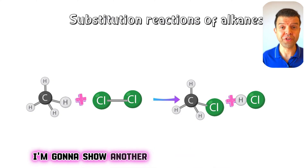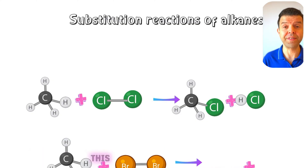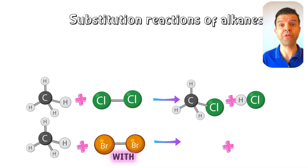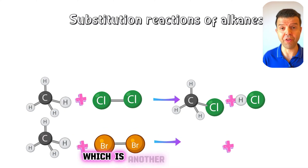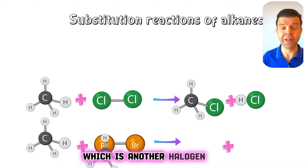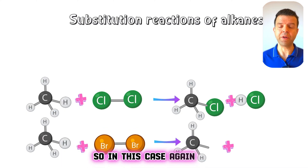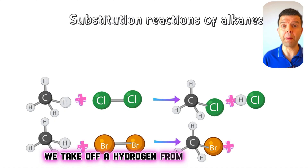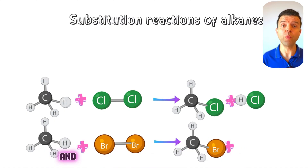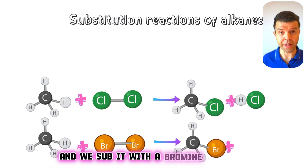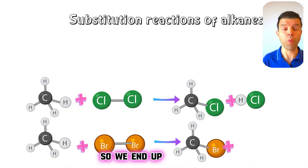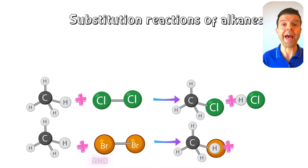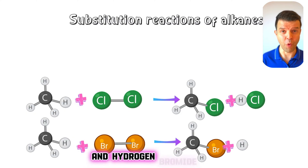Here is another substitution reaction, this time with methane and bromine, which is another halogen. Again, we take off a hydrogen from the methane and substitute it with a bromine atom. So we end up with bromomethane and hydrogen bromide.